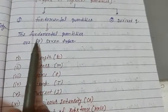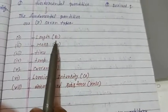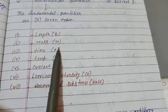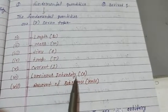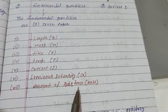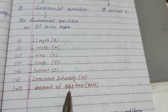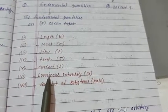Fundamental quantities are seven types. These are length, mass, time, temperature, current, luminous intensity, and amount of substance. You will see these fundamental quantities you will learn.